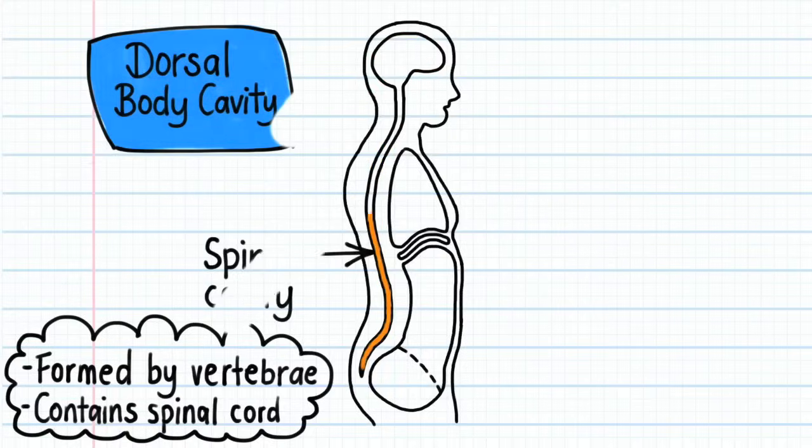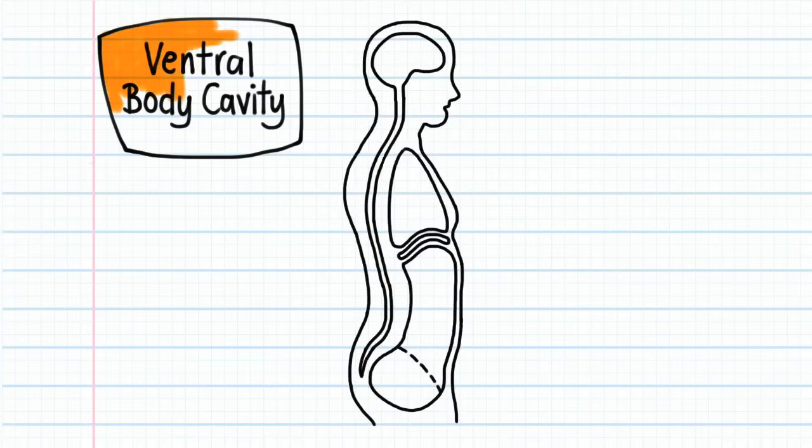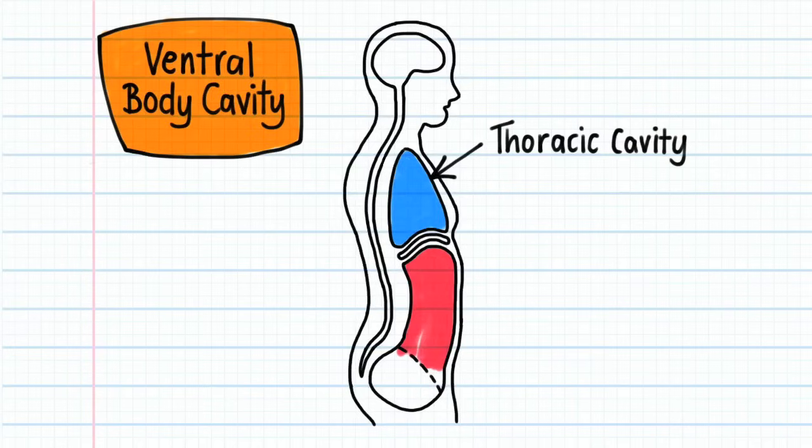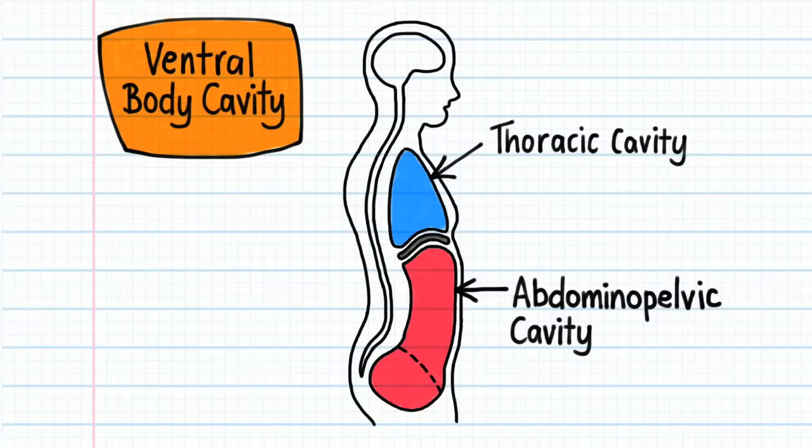Next is the ventral body cavity. It can be subdivided into two parts: the superior thoracic cavity and the inferior abdominal pelvic cavity, which are separated by a flat muscular sheet called the diaphragm.